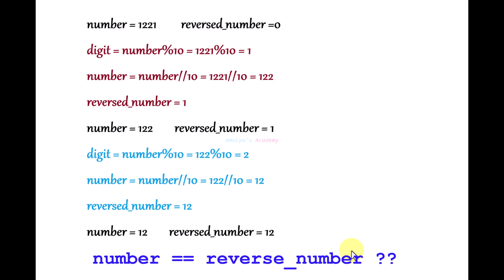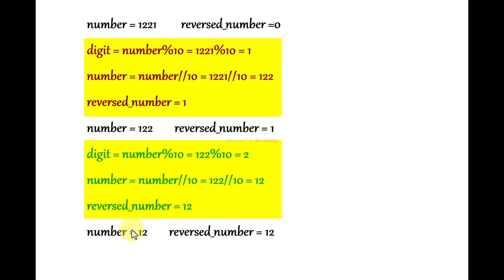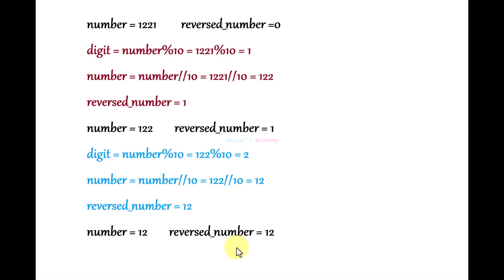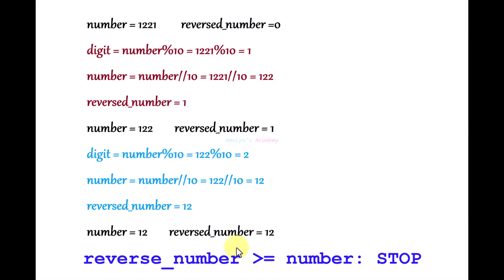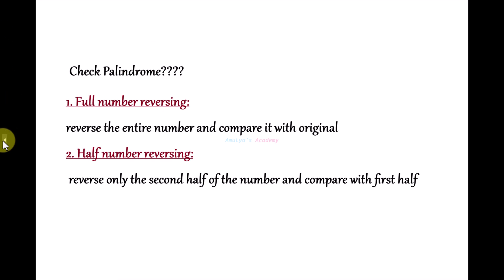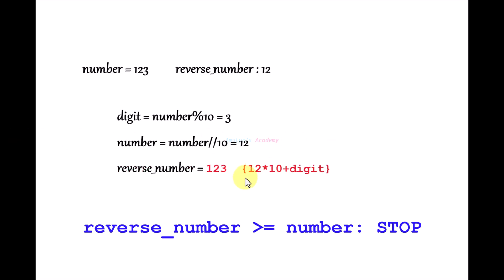One important thing: we need to know when to stop the loop. We keep reversing digits again and again, and the stopping condition is when reverse_number becomes greater than or equal to the number. You can see this condition applied in both examples.